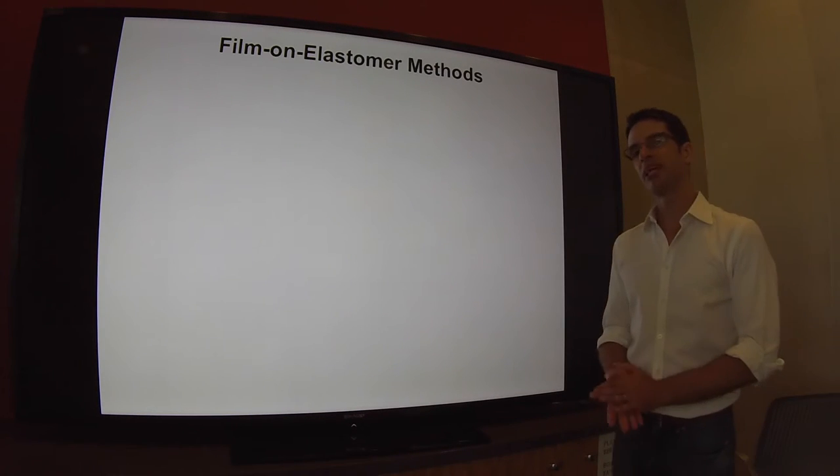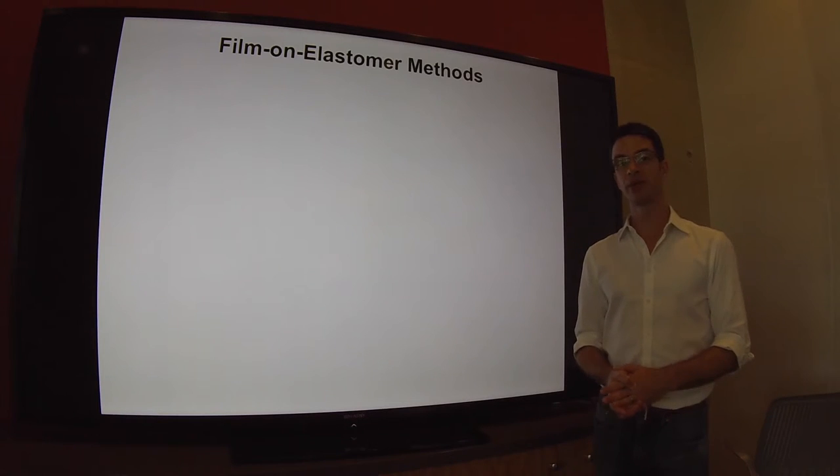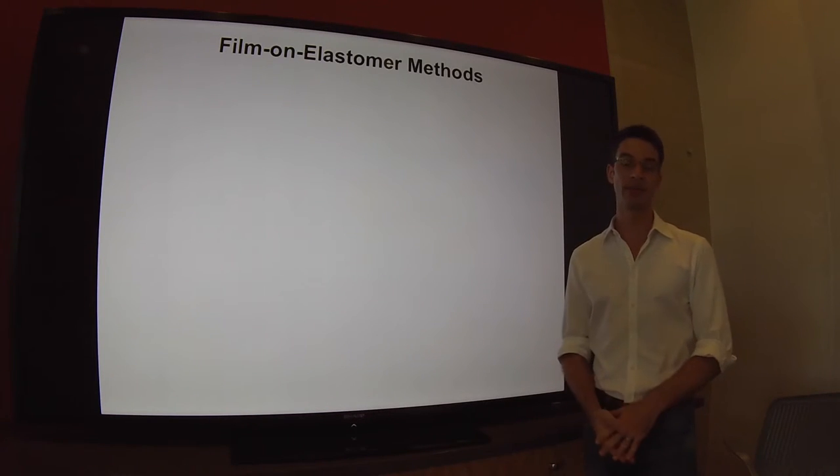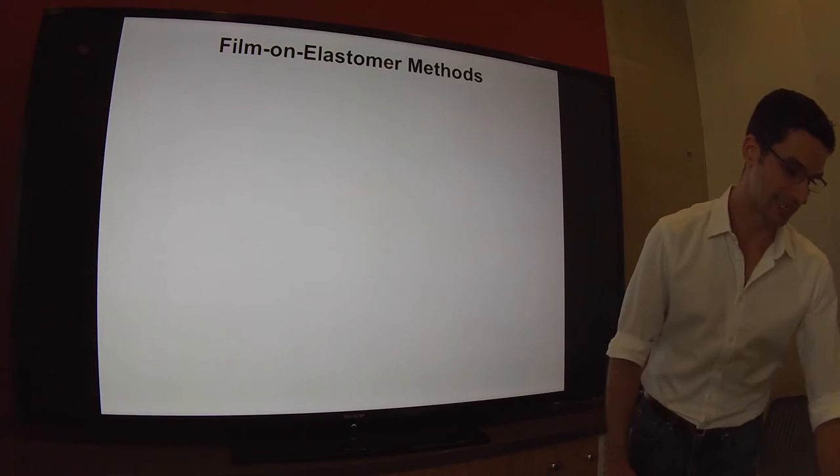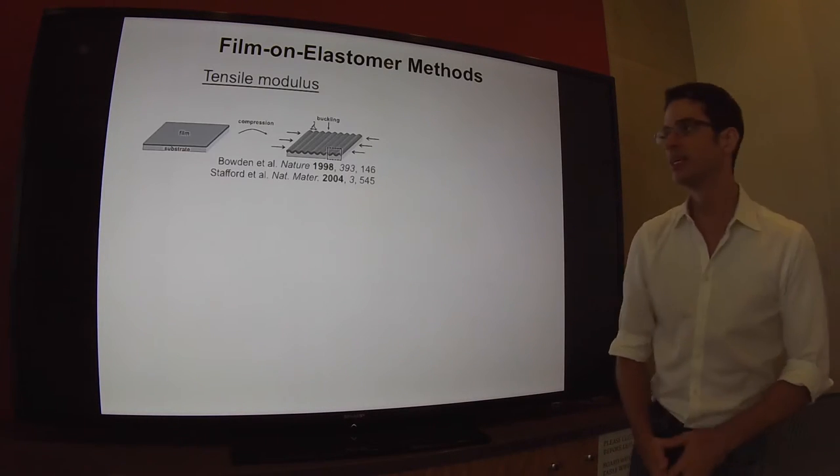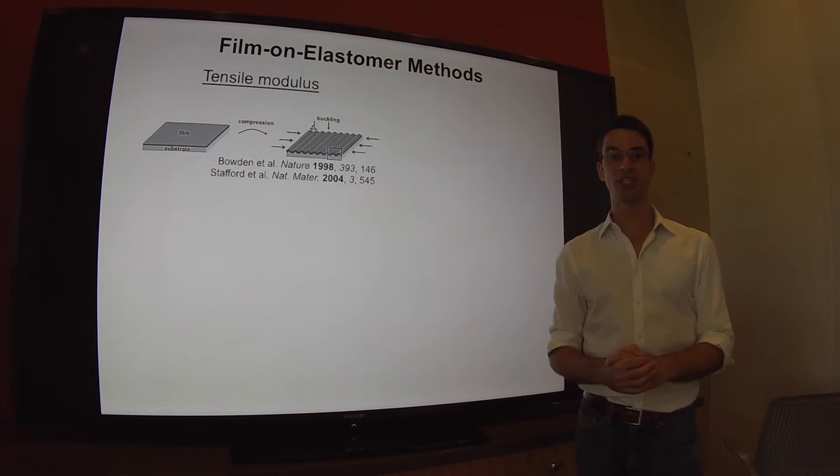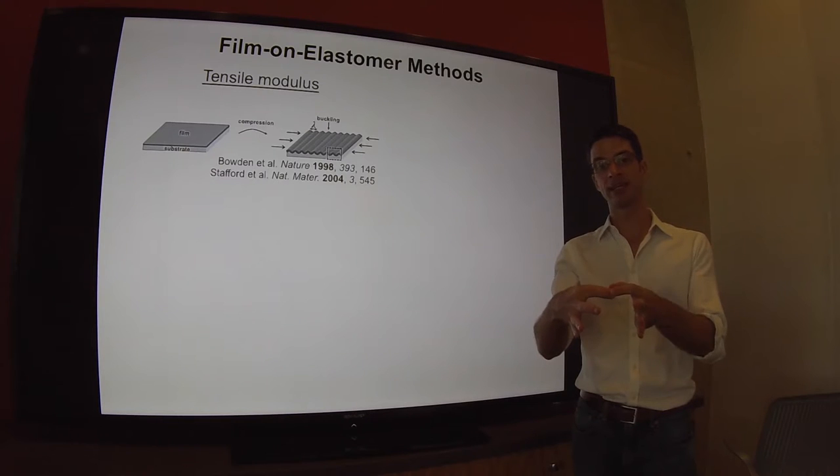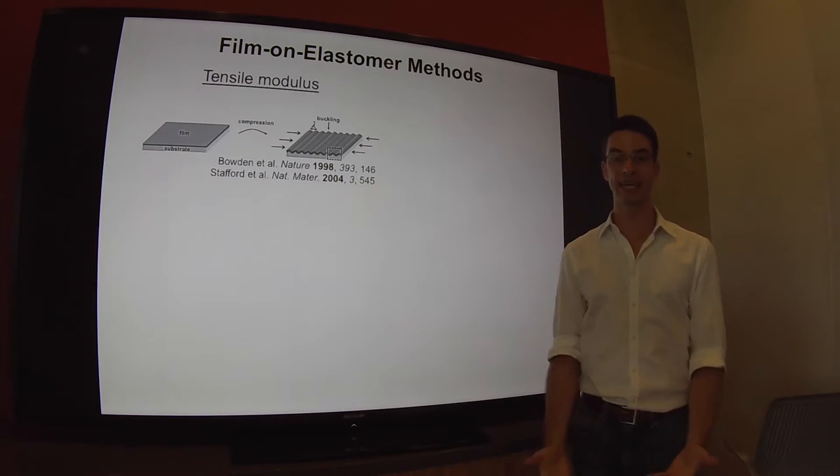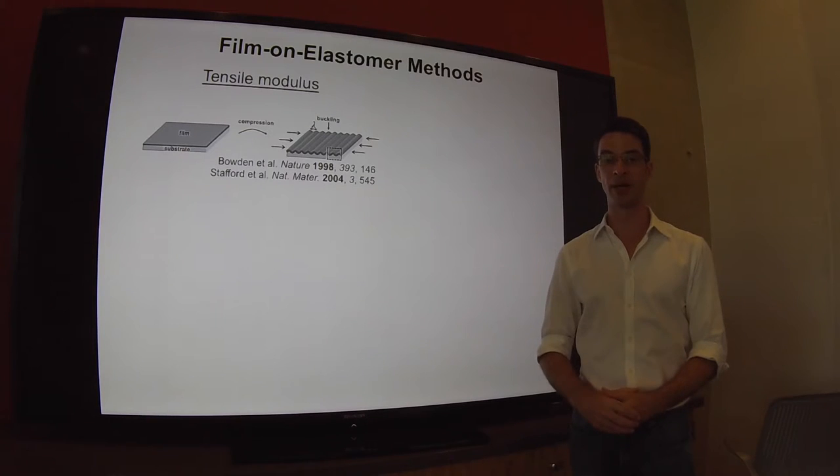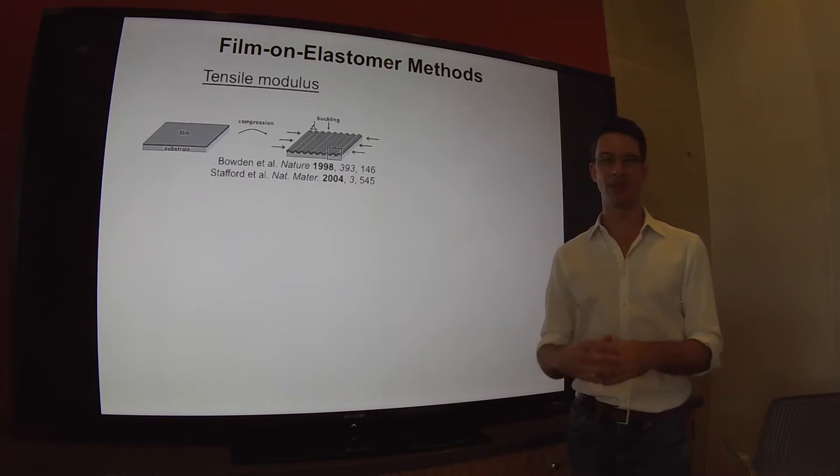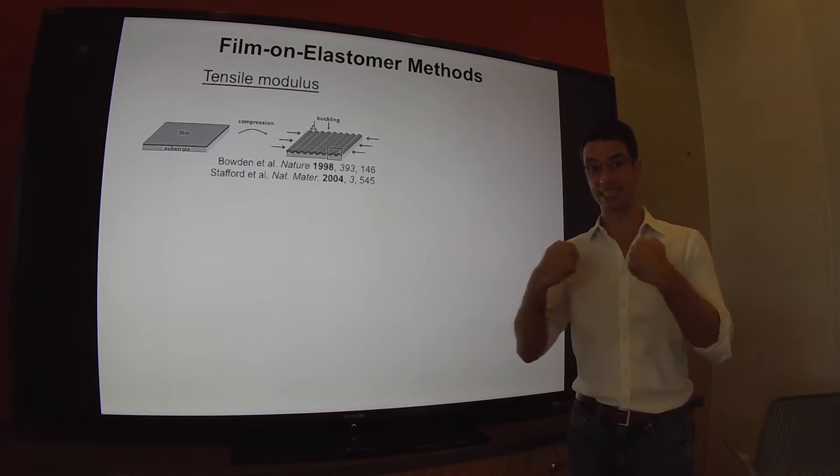One of the major challenges associated with measuring the mechanical properties of these materials is that they are almost always used in thin film form, films that are less than 200 nanometers thick. It's very difficult to get the mechanical behavior from a traditional pull test because it's hard to manipulate a freestanding film. And if you're working with synthetic chemists, you might only get a few milligrams of material at a time.